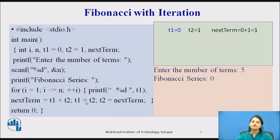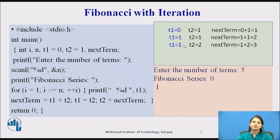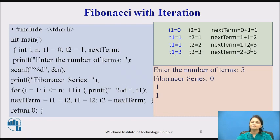Next, T1 is replaced by T2 and T2 is replaced by the next term. So T1 becomes 1 and T2 becomes 1, and this will be printed again in the loop as 1. Then T2 is replaced and next term becomes 3, so T1 is 1, the previous T2 value is 2, and T2 equals next term which is 3. So it will print 2. In the 5th round, T1 is 3 and T2 is 5, so next term will be 8, and T1 is 3, giving 5 terms printed.